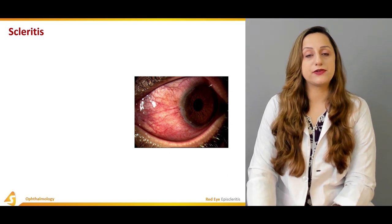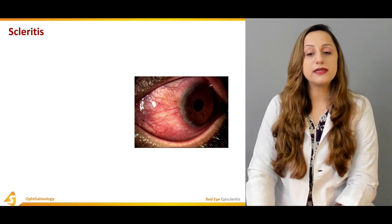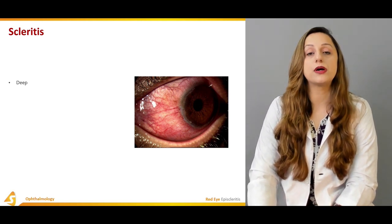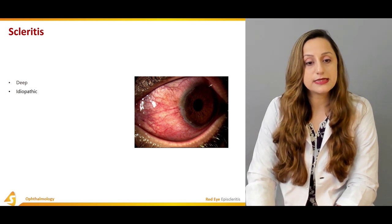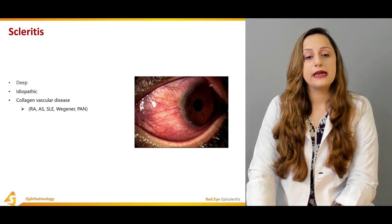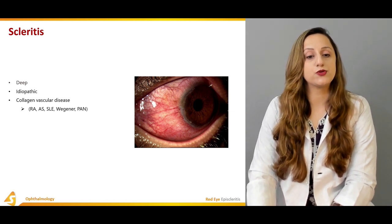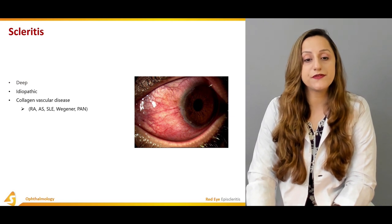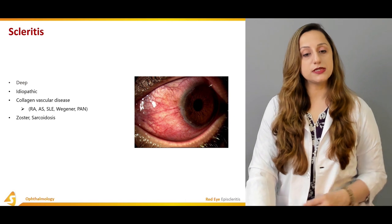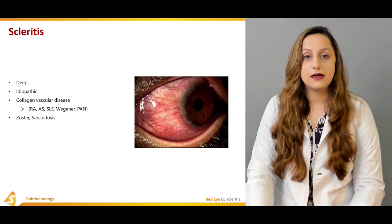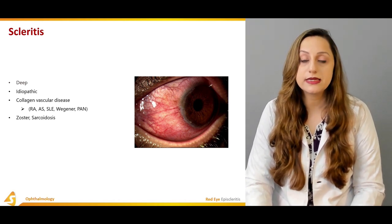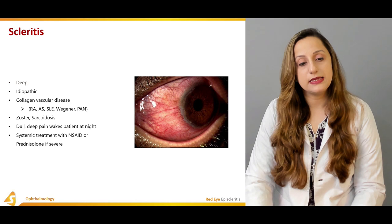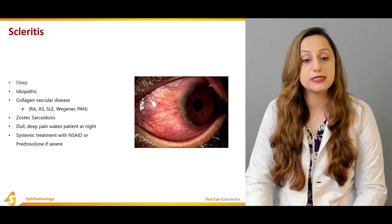Scleritis involves the whitish structure visible in the anterior aspect of the eye and is a much deeper infection than episcleritis. It can be idiopathic and is associated with many collagen vascular diseases, including rheumatoid arthritis, SLE, Wegener's disease, and polyarteritis nodosa. Herpes zoster and sarcoidosis are systemic diseases that can also manifest as scleritis. It typically presents as a dull, deep pain that wakes the patient at night, and systemic treatment includes NSAIDs or prednisolone if severe.